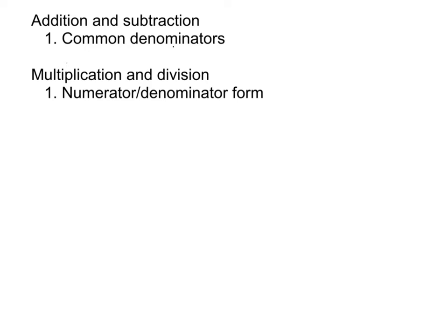Hey guys, just wanted to go over a few things that we went over today in class. What we have on our screen is a reminder that we're able to group together addition and subtraction because they're so similar — their very first step is to find common denominators. As far as multiplication and division, we group them together because their first step is to make sure they're in numerator-denominator form. Let's take a look first at some addition and subtraction.